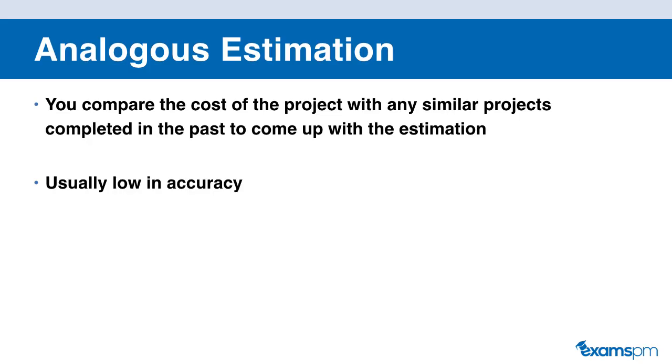So first up, we have analogous estimation. You use analogous estimation when you compare the cost of the project with any similar projects that you have done in the past in order to come up with the estimation for your current project. You use this technique when you have little information about the current project and you have done similar projects in the past. The cost estimation of this technique can be considered a rough order of magnitude as the accuracy of this estimate is not really good. So this estimation technique is also known as the ballpark estimate.